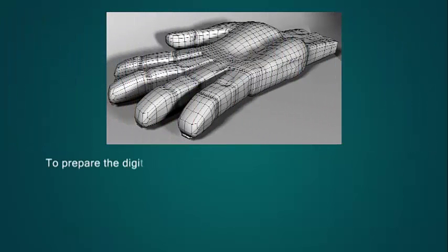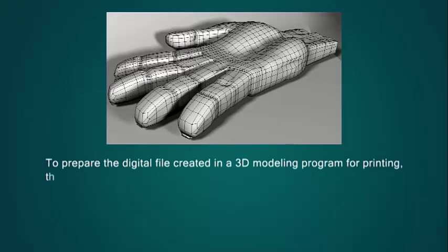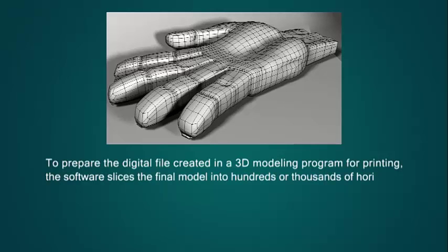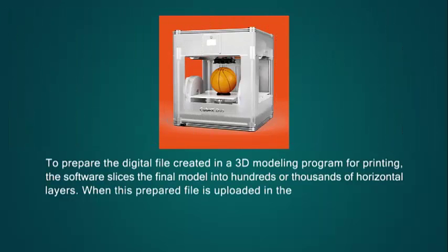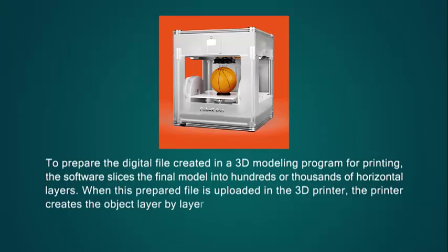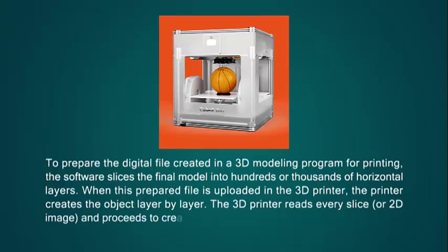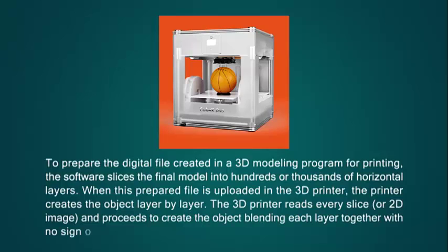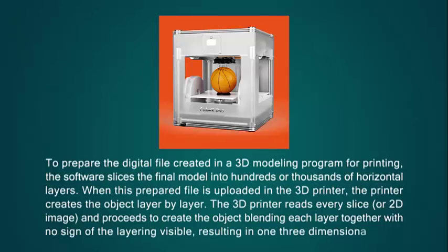To prepare the digital file created in a 3D modeling program for printing, the software slices the final model into hundreds or thousands of horizontal layers. When this prepared file is uploaded in the 3D printer, the printer creates the object layer by layer. The 3D printer reads every slice or 2D image and proceeds to create the object, blending each layer together with no sign of the layering visible, resulting in a three-dimensional object.